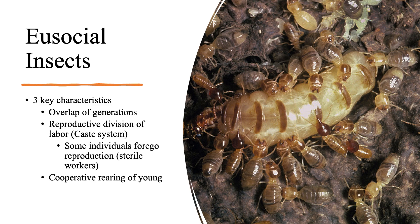Here is a depiction of Nasute termites. The soldier has a highly sclerotized, cone-shaped head that allows it to secrete different defensive compounds to protect the nest and its inhabitants. These others with shortened mandibles are the workers.